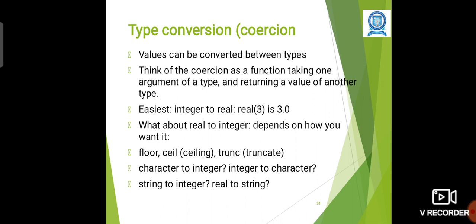Type conversion: Values can be converted between types. Think of the coercion as a function taking an argument of a type and returning a value of another type. For example, integer to real: real(3) means the integer value 3 will be converted into real value, so we will get 3.0. Other type conversion methods are also available: character to integer, integer to character, string to integer, real to string.